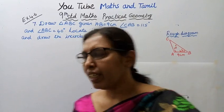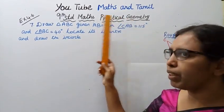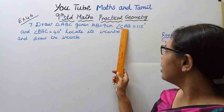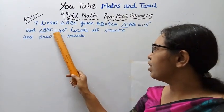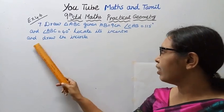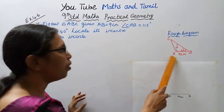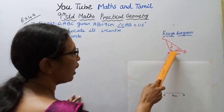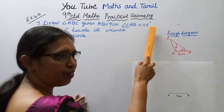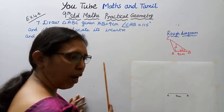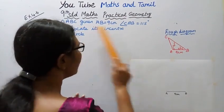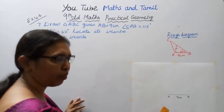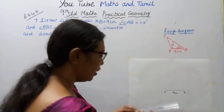Hello students, welcome to Max and Tumble Channel 9. Center Max Practical Geometry Exercise 4.6: Draw triangle ABC given AB equal to 9 centimeters, angle CAB equal to 115 degrees, and angle ABC equal to 40 degrees. Locate its incenter and draw the inscribed circle. AB equals 9 centimeters. This is a rough diagram.